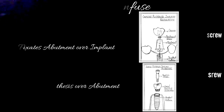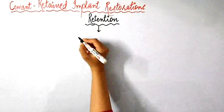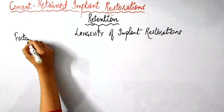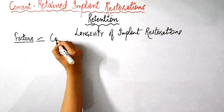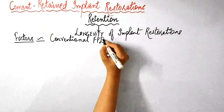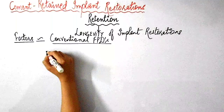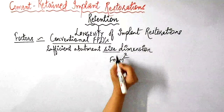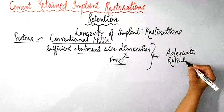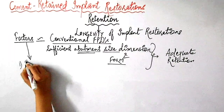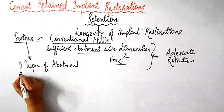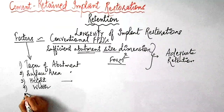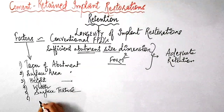Now let's talk about the retention of cement retained implant restorations. The security of retention is considered one of the most important factors influencing the longevity of an implant prosthesis. The factors that influence the retention of cement retained implant restorations are more or less similar to conventional fixed prosthodontic procedures for natural teeth, and a sufficient abutment size, dimension, and form are required for adequate retention. These factors include: taper of the abutment, surface area, height and width of the abutment, surface texture, and the type of cement used.